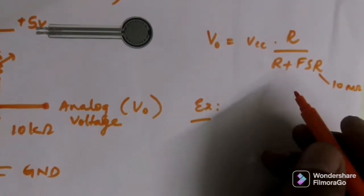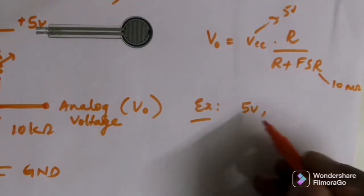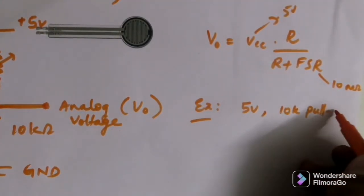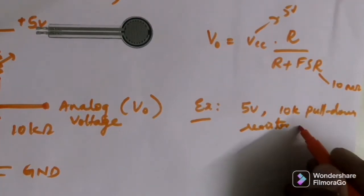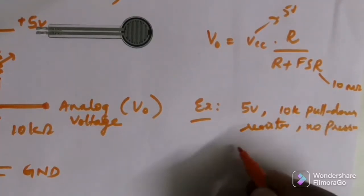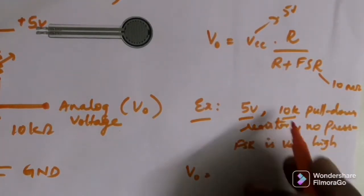For example, so 5 volts supply, 5 volts supply, and 10K ohm pull-up resistor. When there is no pressure, FSR is very high. So I'll test it practically with applying values. These values I'll apply.